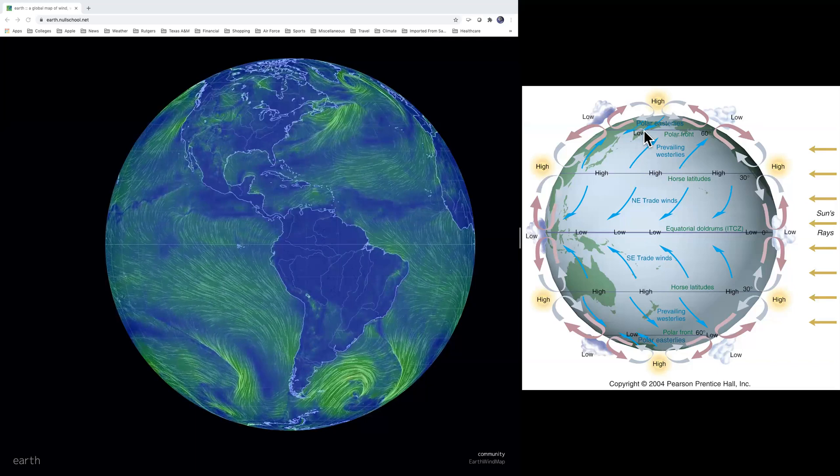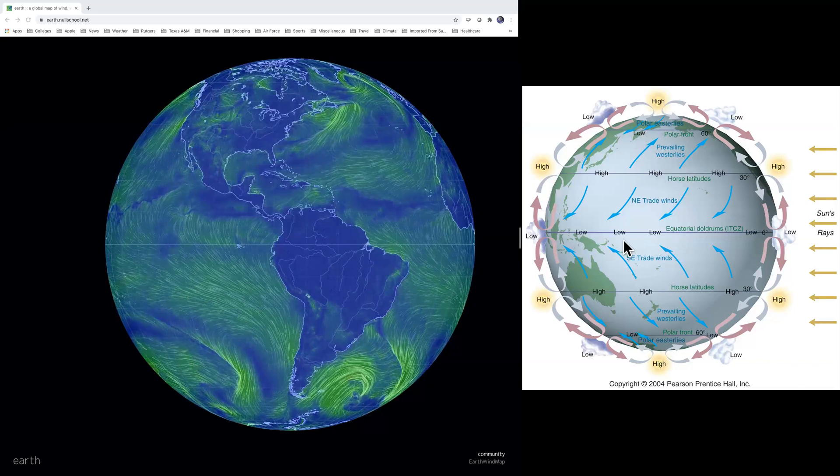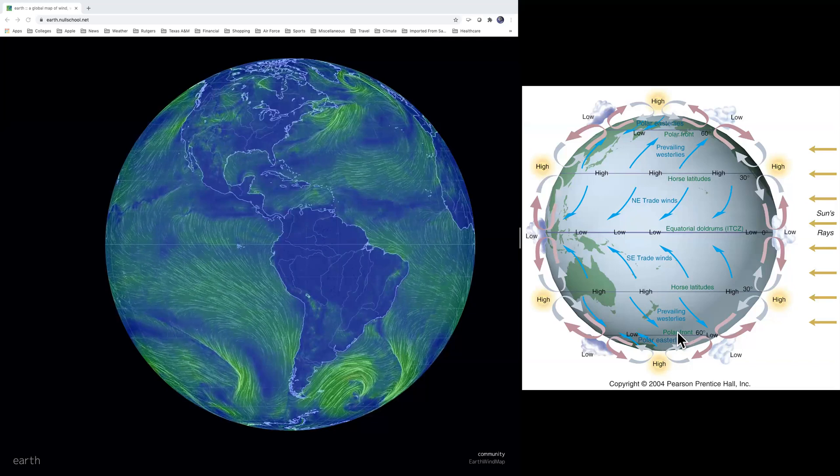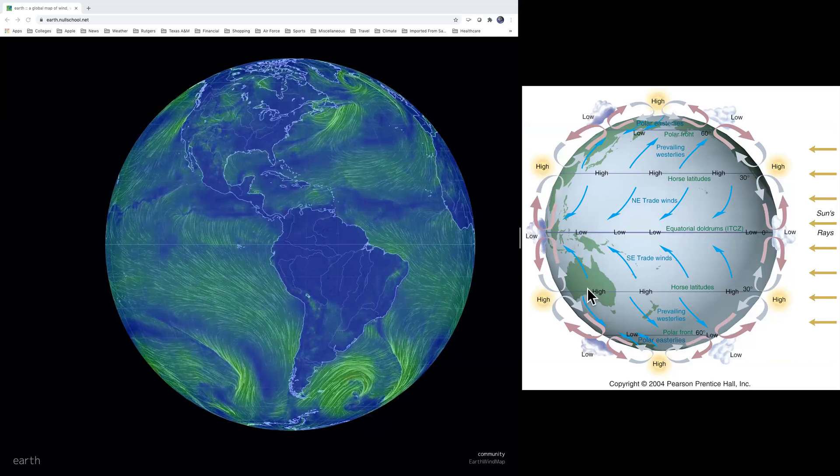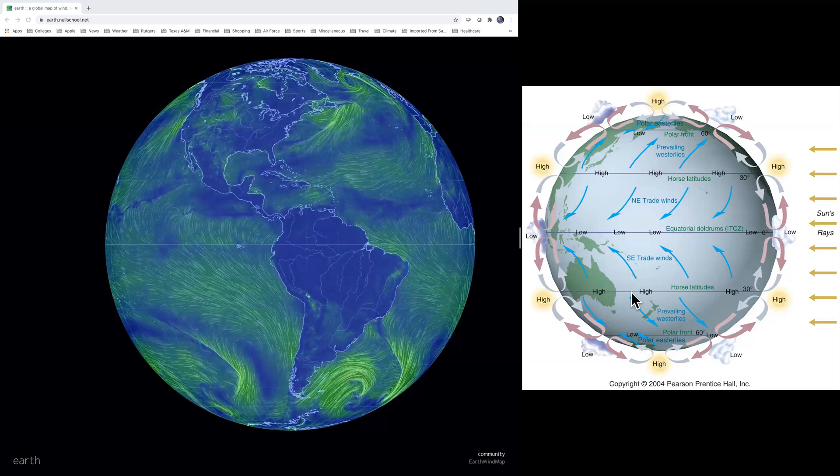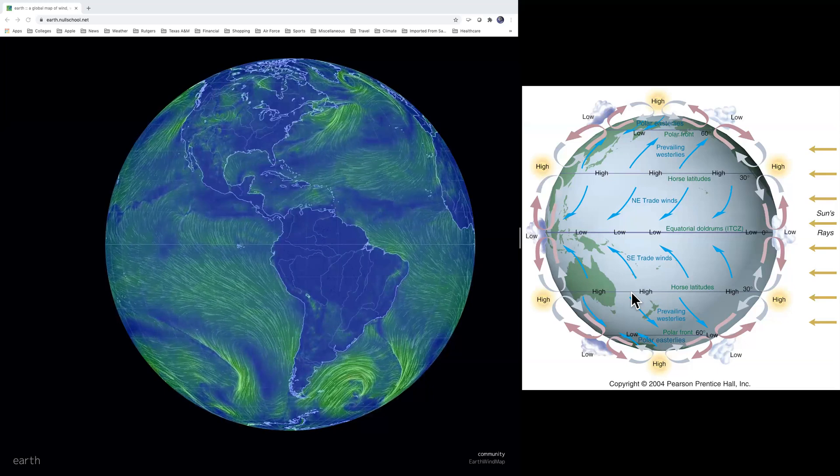So in the end, you have high, low, high, low pressure, back to high, low, and high pressure again. So this is an idealized earth. This hardly ever looks exactly like this. Sometimes it approaches it. Sometimes it doesn't look like it at all.